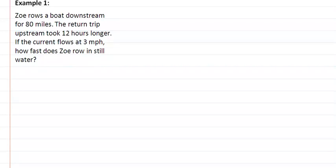In our first example, Zoe rows a boat downstream for 80 miles. Downstream is going to increase our speed, so we have r plus 3, since the current flows at 3 miles per hour, times our time equals 80. The return trip upstream took 12 hours longer, so upstream takes off our speed and we have time plus 12, and that will be 80 also.